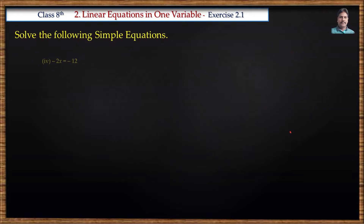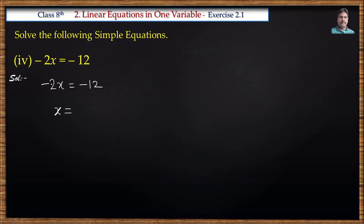Next problem: minus 2x is equal to minus 12. Let us solve this one. We need x value. Minus 2 is multiplied on the left side, so we divide the right side by minus 2. That gives minus 12 by minus 2. 2 sixes are 12, and minus by minus cancels, so x is equal to 6.